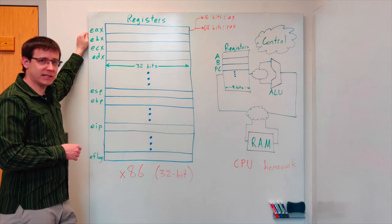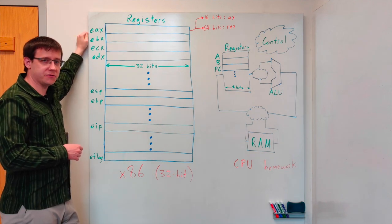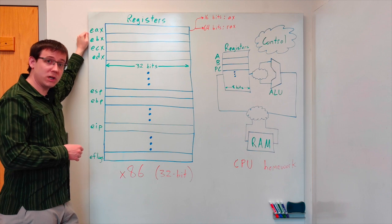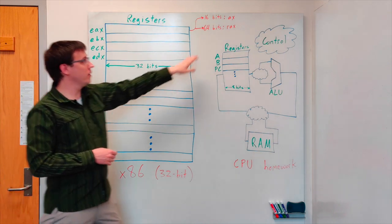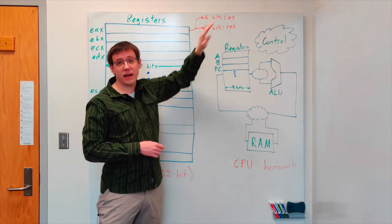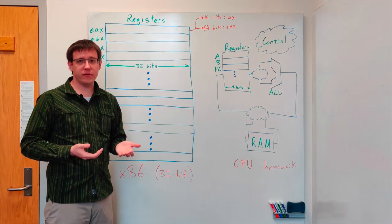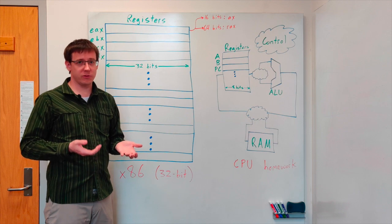You'll notice that the names of all other registers start with an E which is for extended because originally the x86 architecture supported 16-bit registers that were named AX, BX, and so on. The E prefix refers to the 32-bit version of the register.